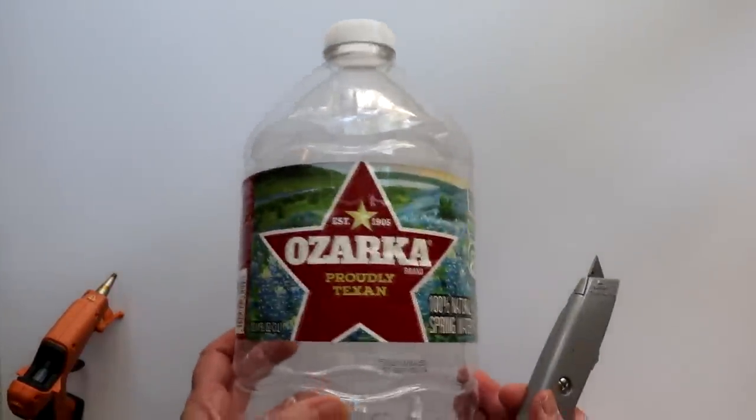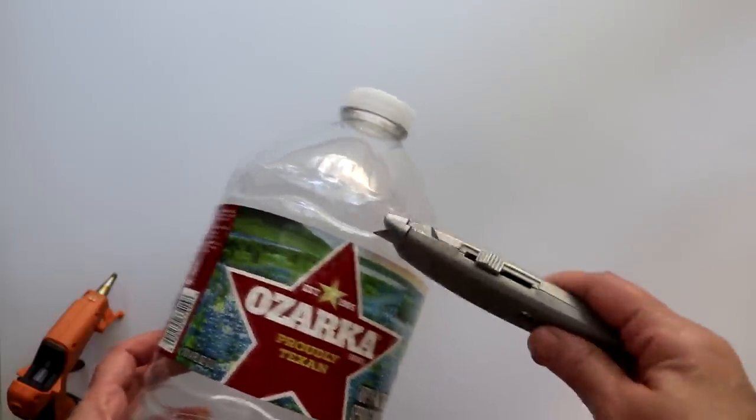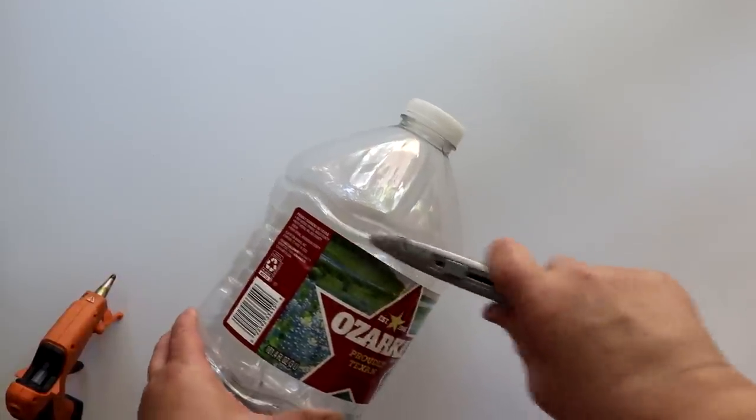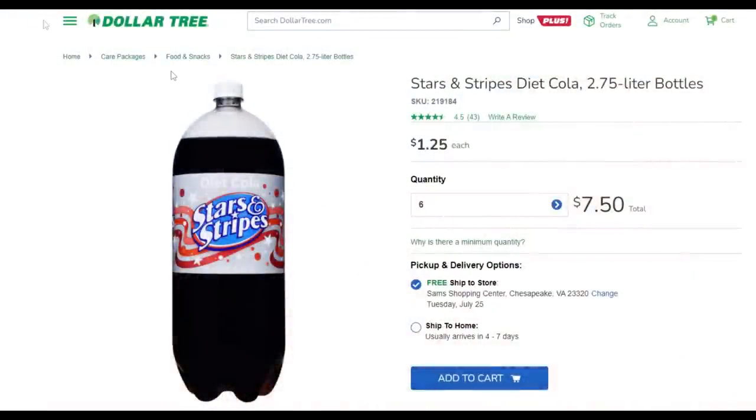To make, I took a recycled Ozarka water bottle I had on hand and using a utility knife, I cut off the top third of the bottle. The shape of this bottle is actually not the best for use in this dupe. However, if you happen to have a Dollar Tree soda bottle or something similar, I think that would be the perfect shape and size.